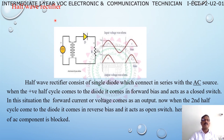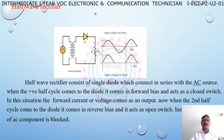There are three types of rectifiers: half wave rectifier, full wave rectifier using center tap transformer, and full bridge rectifier. Half wave rectifier consists of a single diode connected in series with the AC source.